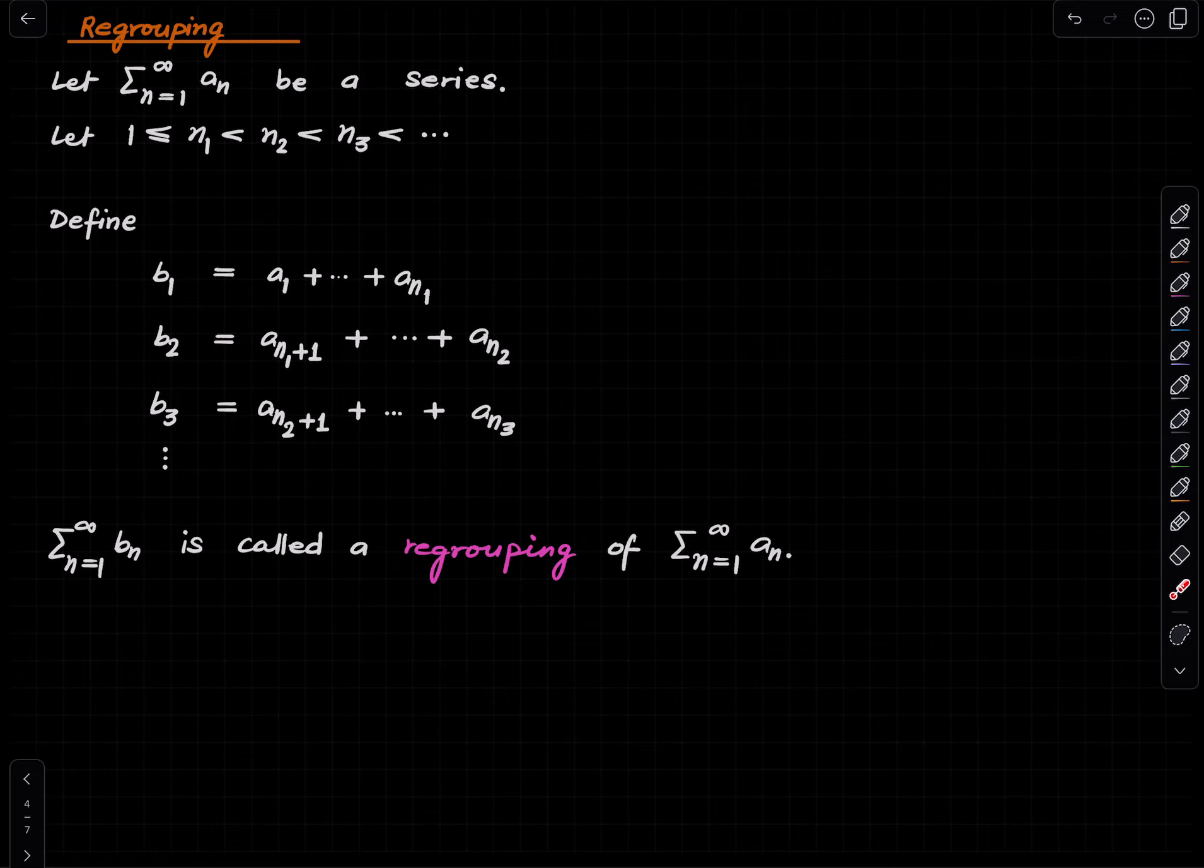This is called a regrouping of the original series. We have grouped the first n₁ terms, then the next n₂ minus n₁ terms, then the next n₃ minus n₂ terms.